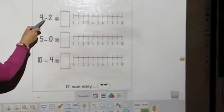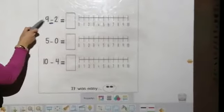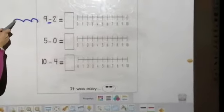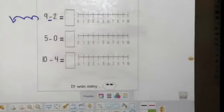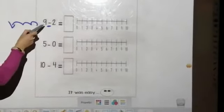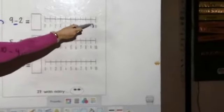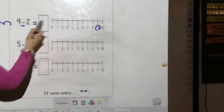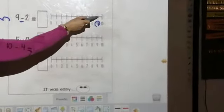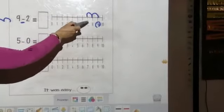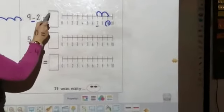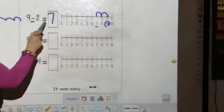So, 9 minus 2. Minus means going backward. We have to take away 2 from 9. So, we circle number 9. And we have how many steps we're going to jump backward? 2. 1 and 2. Where did we stop at number 7?